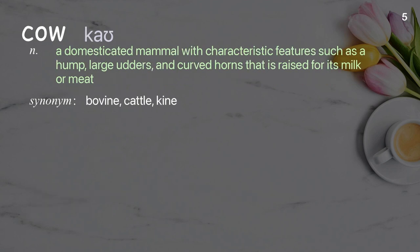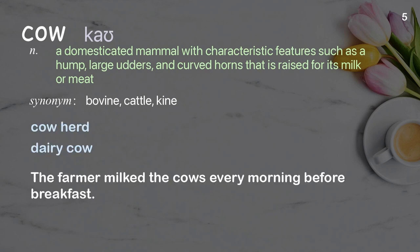Cow. A domesticated mammal with characteristic features such as a hump, large udders, and curved horns that is raised for its milk or meat. Examples: cow herd, dairy cow. The farmer milked the cows every morning before breakfast.